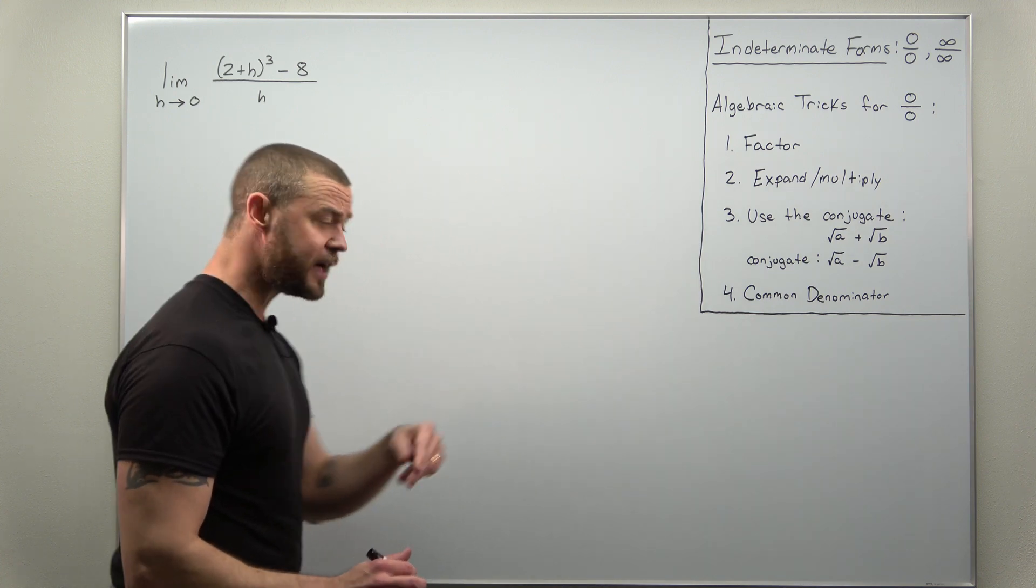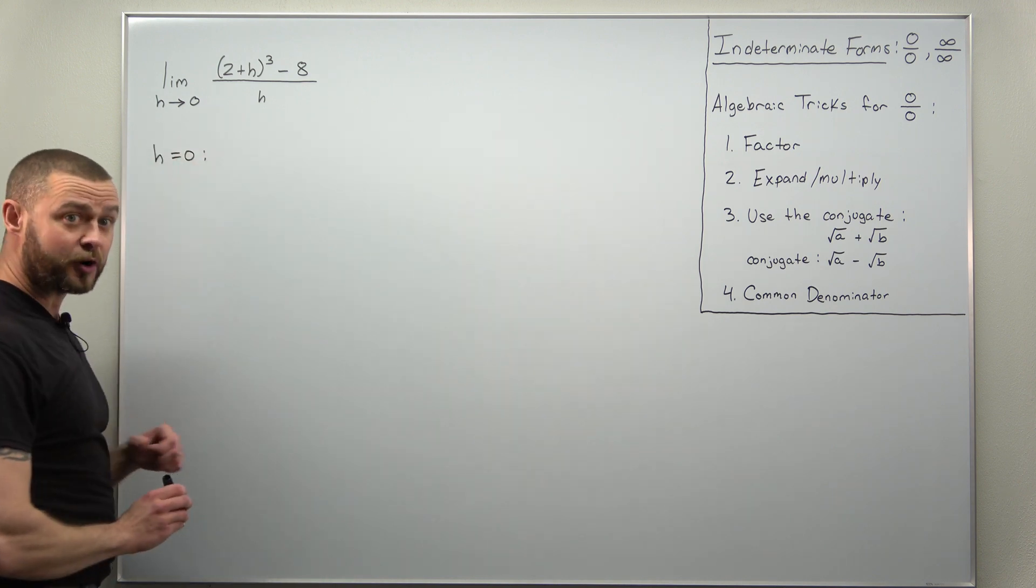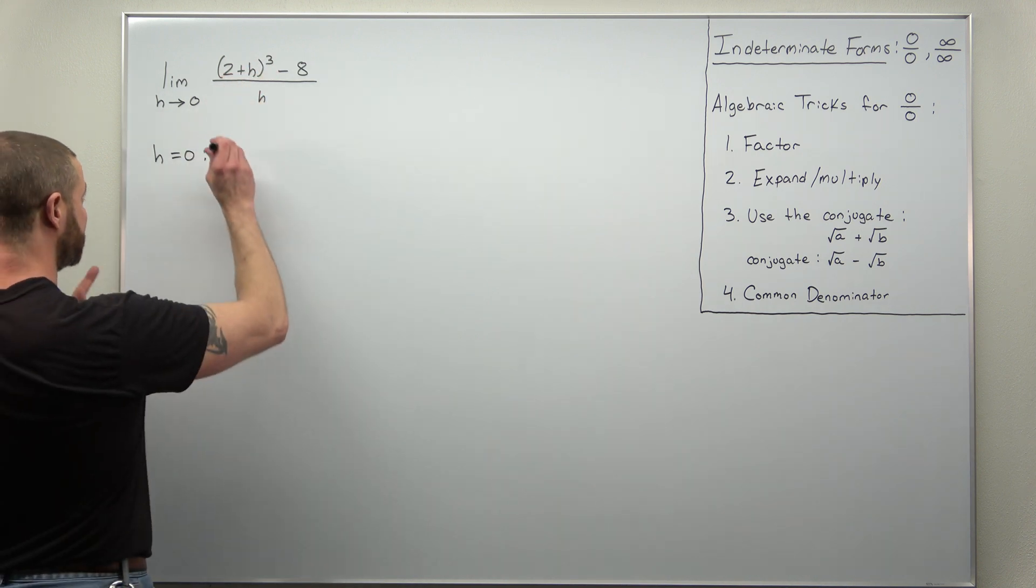All right, now let's check that we have an indeterminate form. If you plug in h as zero, you're going to get 2 + 0, so 2³ = 8, minus 8, that's zero.